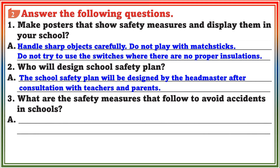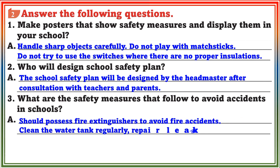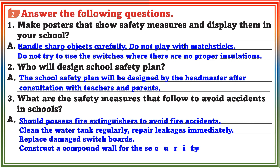Question 3: What are the safety measures to follow to avoid accidents in schools? Answer: Should possess fire extinguishers to avoid fire accidents, clean the water tank regularly, repair leakages immediately, replace damaged switchboards, construct a compound wall for the security of the children.